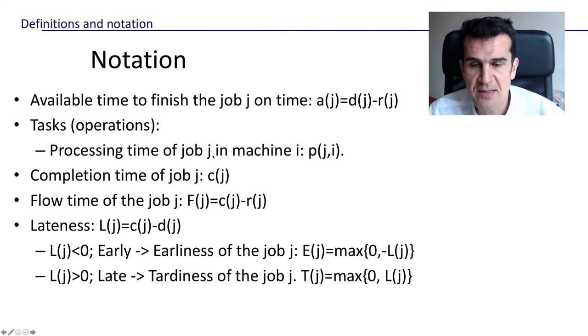So having seen that, what's the available time we have to finish a certain job J? Well, it will be the difference between the due time at which we have to finish this job, minus the time at which that job is ready to be executed. In the static problems, as we saw, the ready time is always zero. Every job is ready to be executed at time zero. So basically, we're going to have as much time as the due date for each job to be processed.